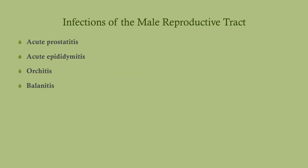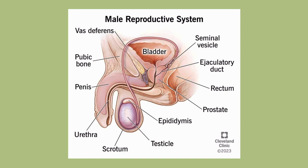There are really only four things we're going to be talking about: acute prostatitis, acute epididymitis, orchitis, and balanitis. This is the male reproductive system — fairly straightforward — but it is important to be familiar with this anatomy.